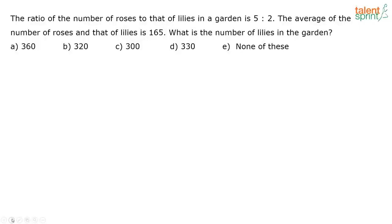The ratio of the number of roses to that of lilies in a garden is 5 is to 2. The average of the number of roses and that of lilies is 165. What is the number of lilies in the garden?